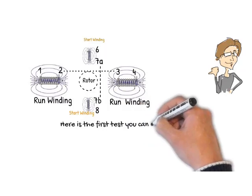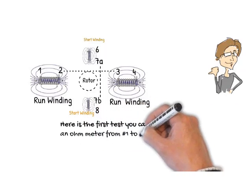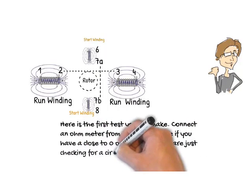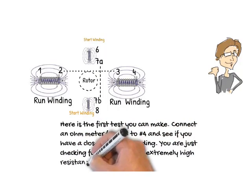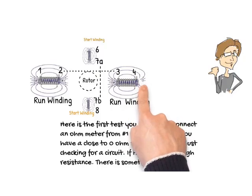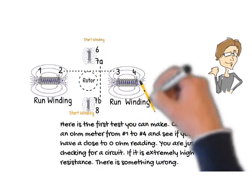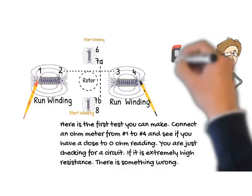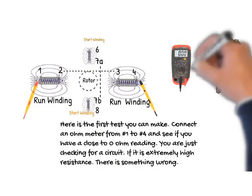Here is the first test you can make. Connect an ohmmeter from number one to number four and see if you have a close to zero ohm reading. If it is extremely high resistance or infinite, there is something wrong in the motor.